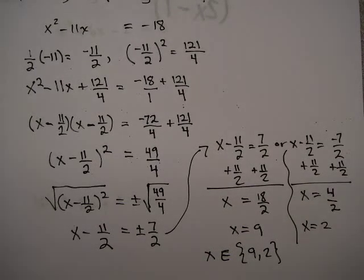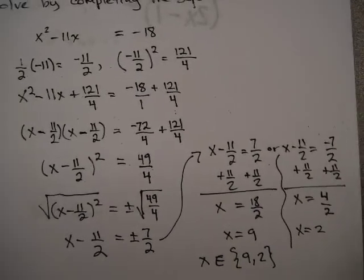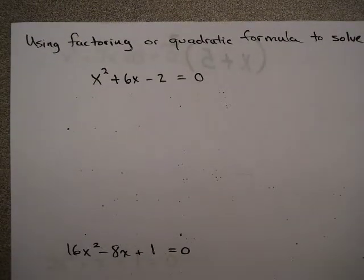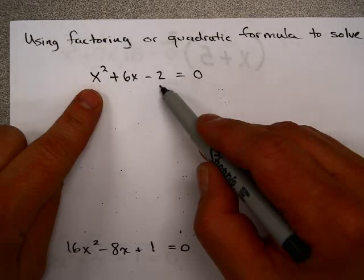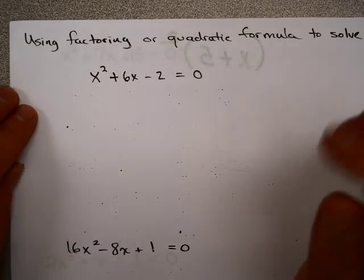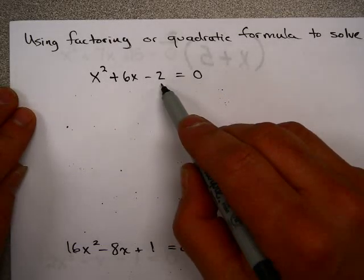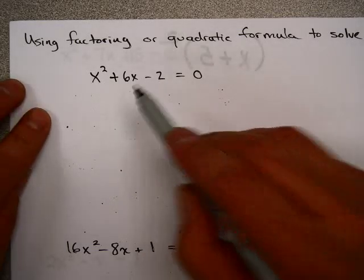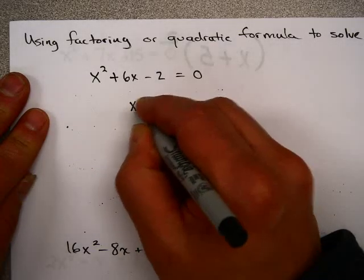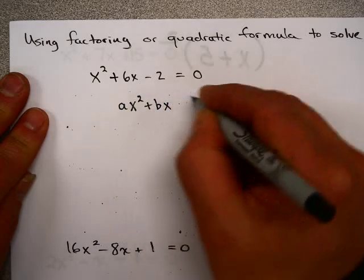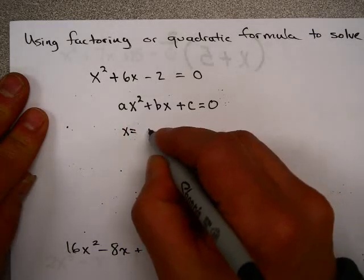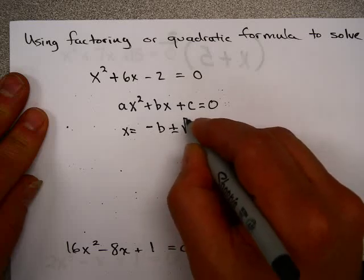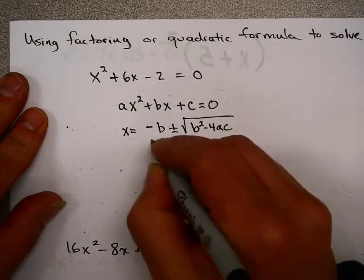There are other ways to solve quadratic equations besides completing the square. Let's look at another method — using factoring or the quadratic formula. If you can factor a trinomial, it's easy to set each factor equal to zero and solve. But sometimes you can't factor it. For those cases, we use the quadratic formula: x equals negative b plus or minus the square root of b squared minus 4ac, all over 2a.